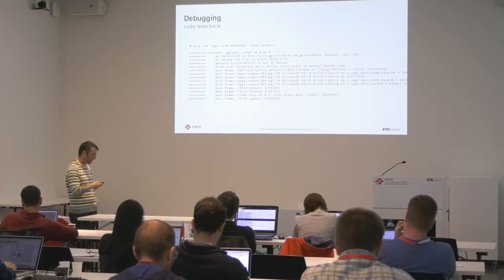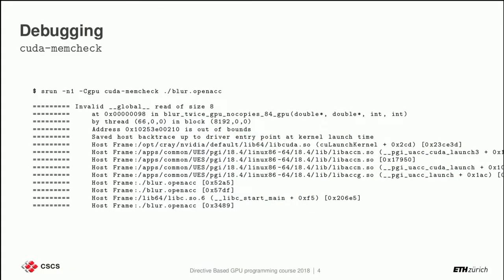Here I've inserted a buffer overflow in one of our examples — the second example we'll see today. For instance, this is the name of the kernel as generated by the compiler: 'blur_twice_gpu_no_copies' is the function name. Line 84 shows thread 6600 in a specific block generated an invalid global read of size 8. Then you get the stack trace, showing how the executable translates through the OpenACC runtime, several layers, and finally into CUDA that launches the kernel.